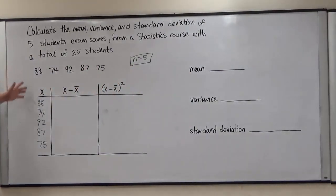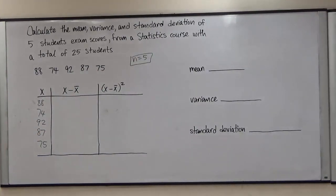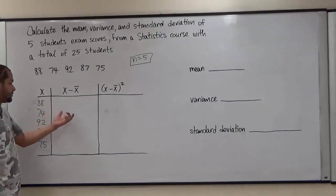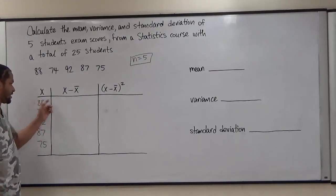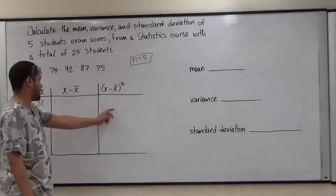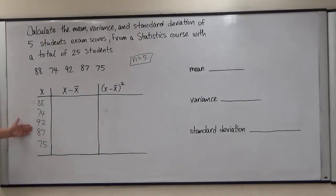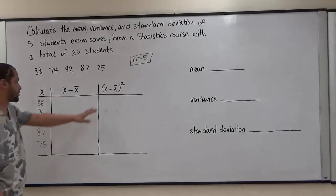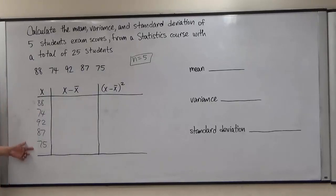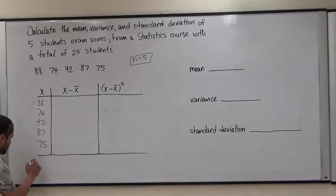Let's find the sum of x first, as that's the most important thing we need to do here. Remember, when you're doing these kinds of problems you need your calculator handy, because we're going to be taking the difference between the sample and the mean and squaring the result. We also need to sum up the values of x and the sum of the squared differences. When we take this sum, we're going to get the sum of x equal to 416.